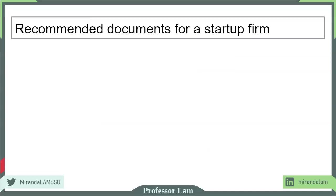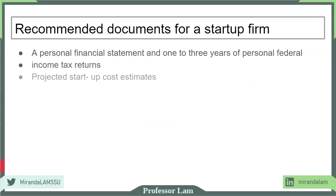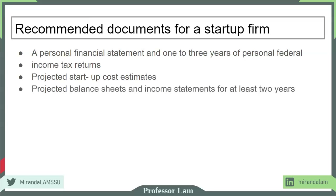If you want to borrow money as a startup firm, here are the documents a bank would typically ask for. Because this is a startup, there is no history for the business, so the bank will want your personal guarantee — a personal financial statement from the founder, income tax returns, and a detailed estimate of startup costs showing how the borrowed funds will be used. You'll also need to create pro forma balance sheets, income statements, and cash flow projections.